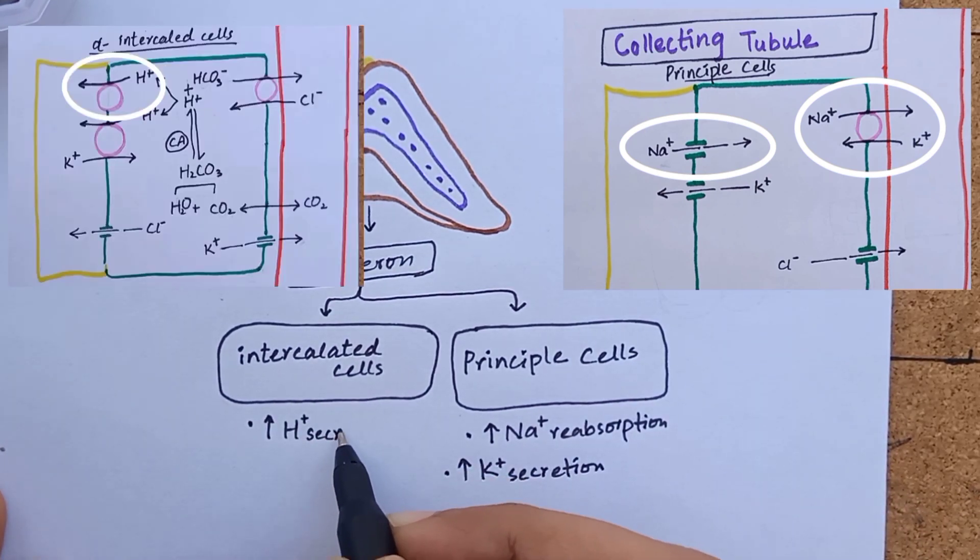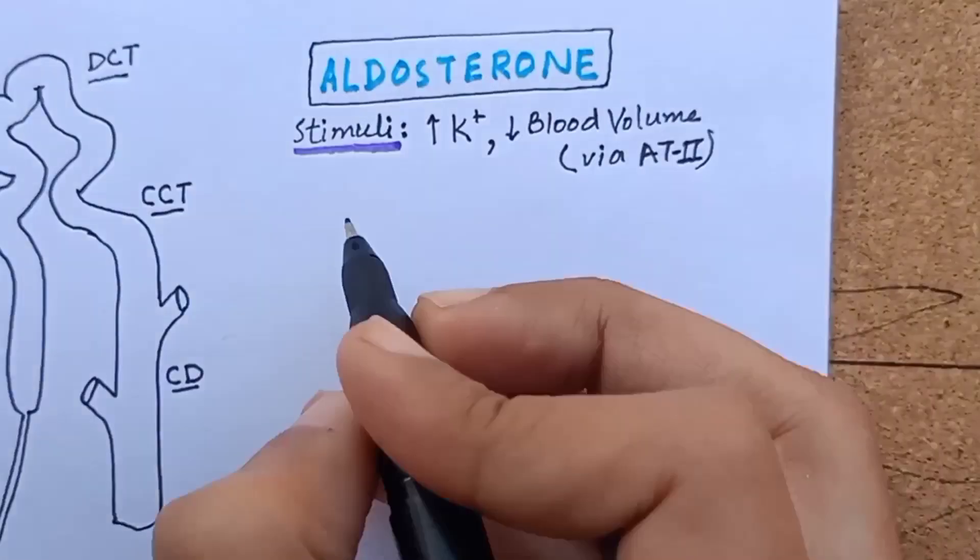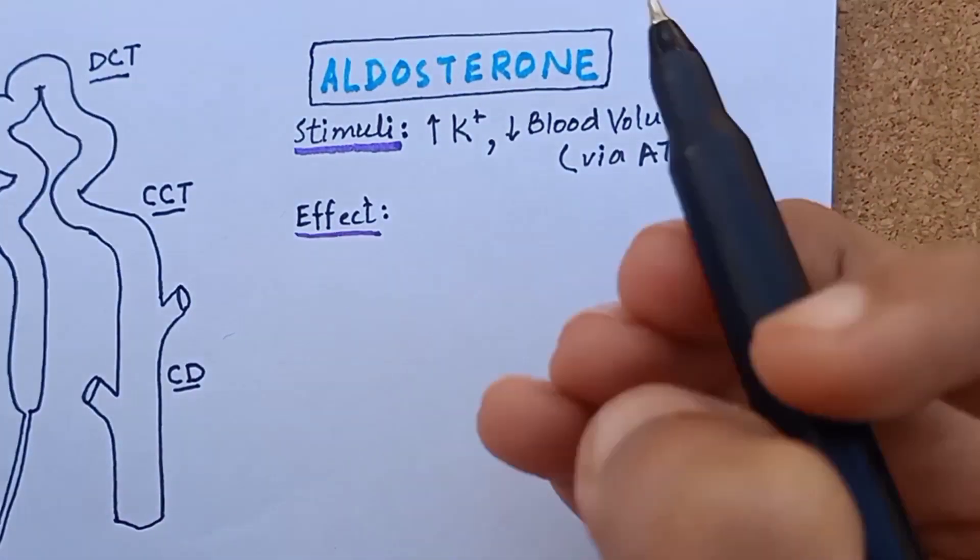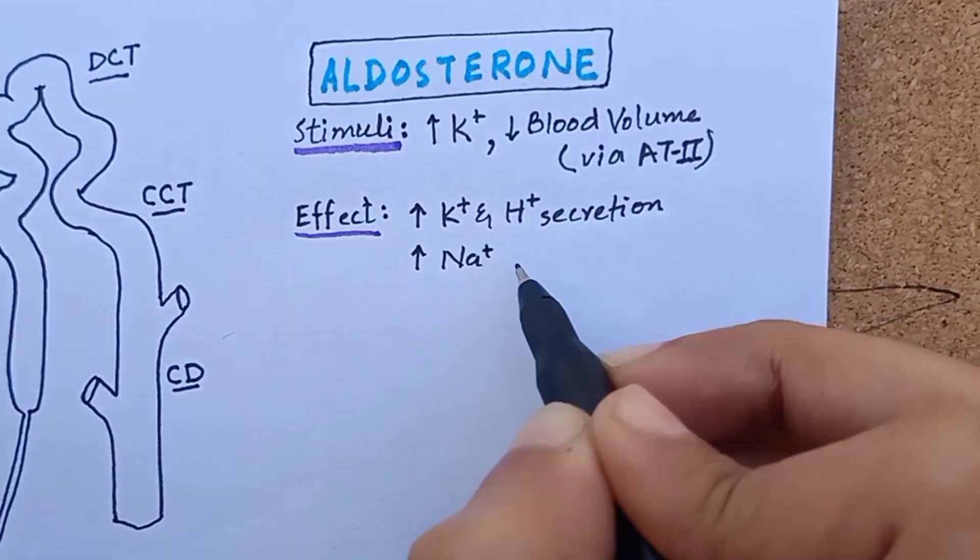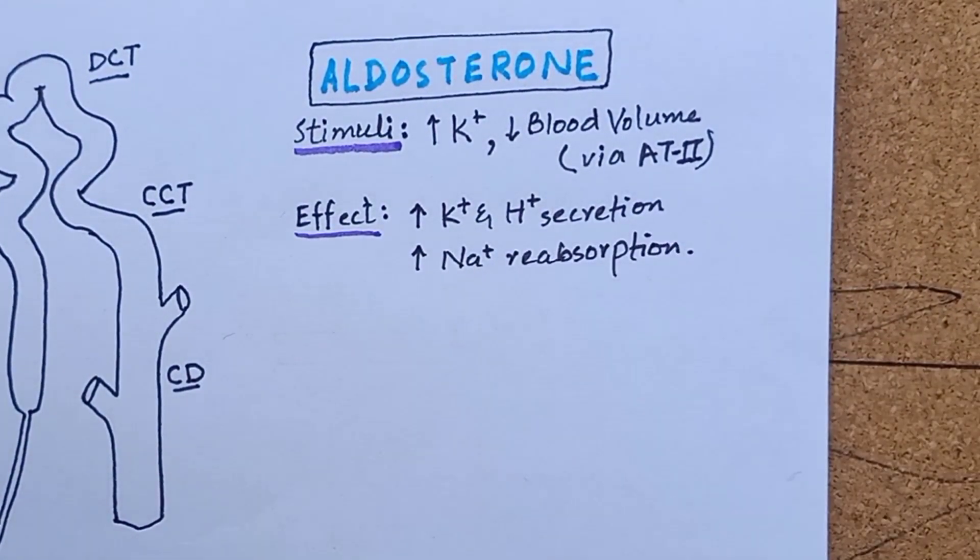It also causes increased hydrogen secretion by activating hydrogen ATPase. So the net effect is increased potassium and hydrogen secretion and increased sodium reabsorption.